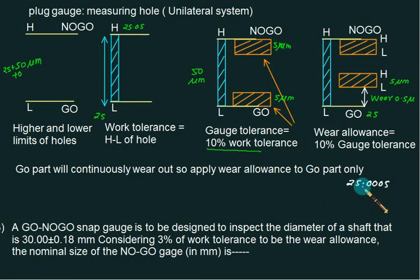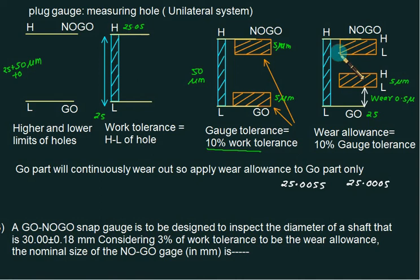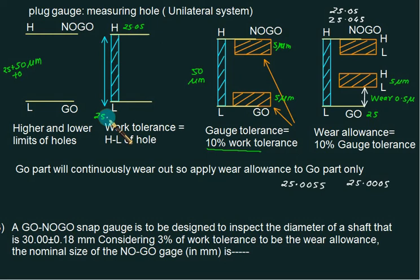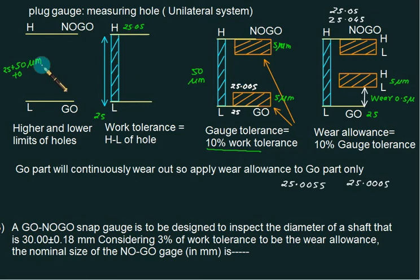The lower limit of the GO gauge is 25.005 and the upper limit is 25.0055. These are the GO side dimensions. For NO GO, calculating from 25.05 and subtracting 5 micron: the higher limit of NO GO is 25.05 and the lower limit is 25.05 minus 5 micron = 25.045. If no wear tolerance is given, the GO side is simply 25 to 25.005. The NO GO calculation remains unchanged. So in the numerical, only include wear allowance if it is given.